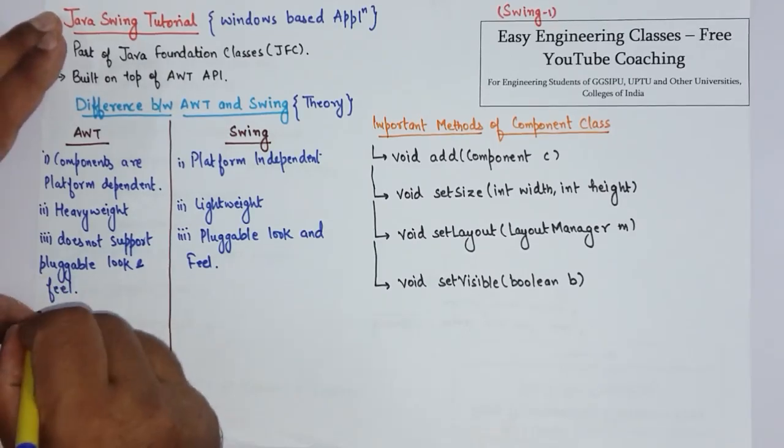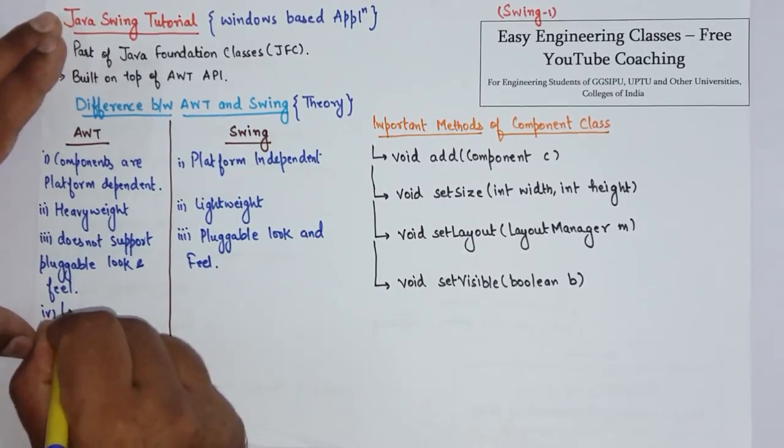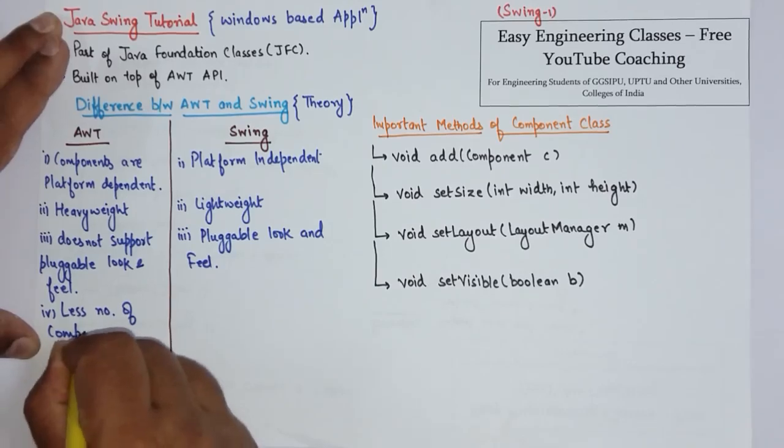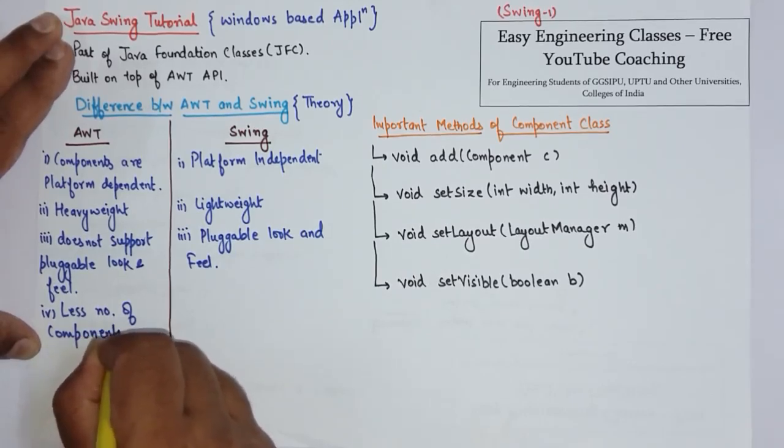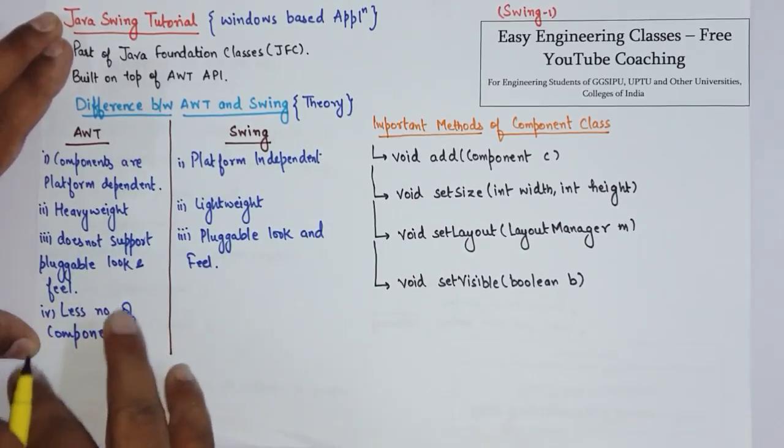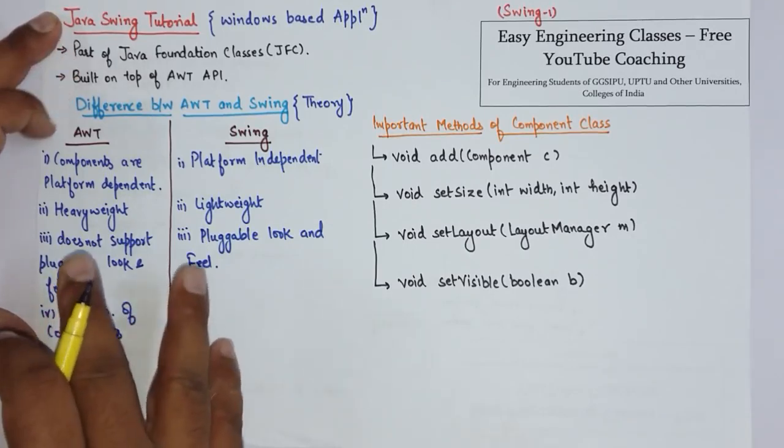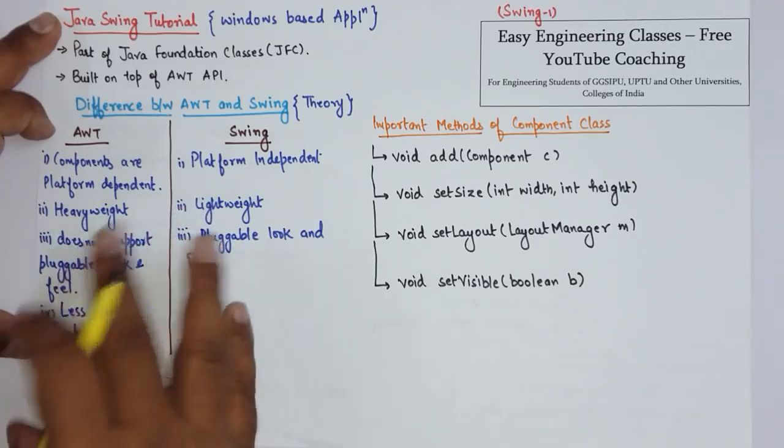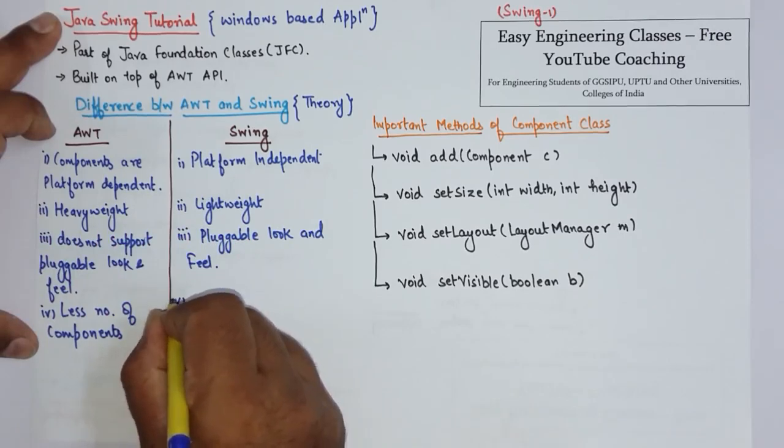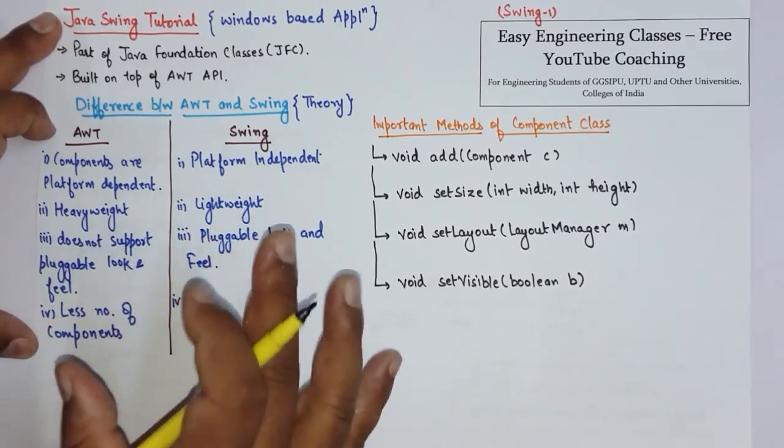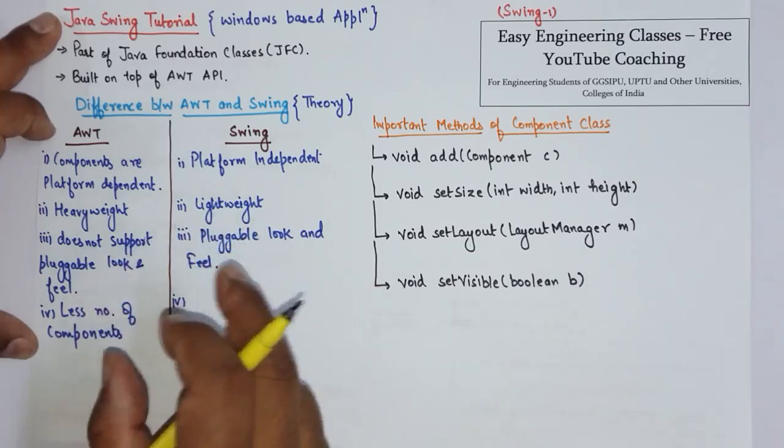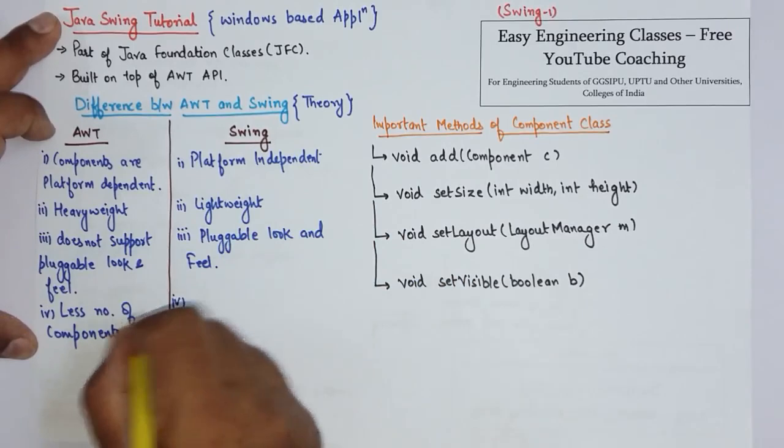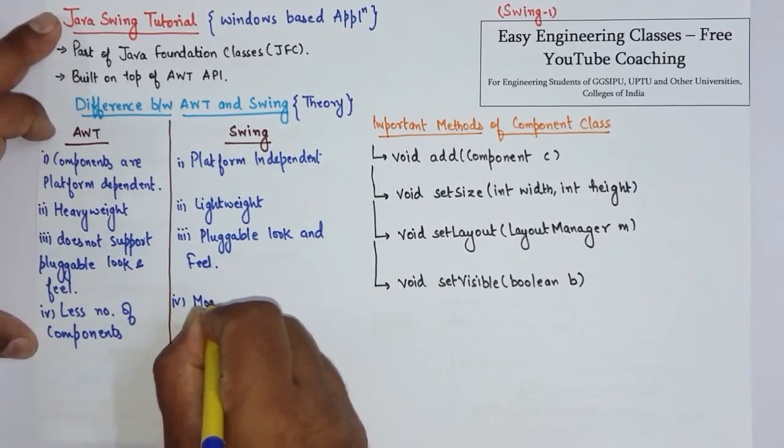Fourth difference is less number of components. For example, AWT does not support any radio class. To make a radio button you have to use checkbox and checkbox group, which I have already covered in Java AWT, whereas Swing provides more number of component classes, for example Swing has a JRadioButton class.